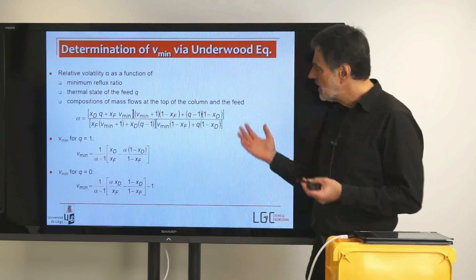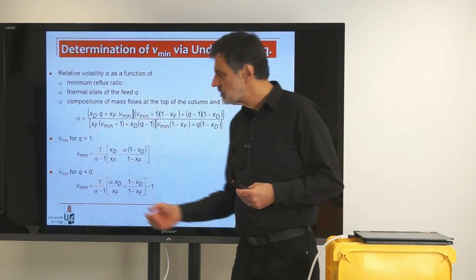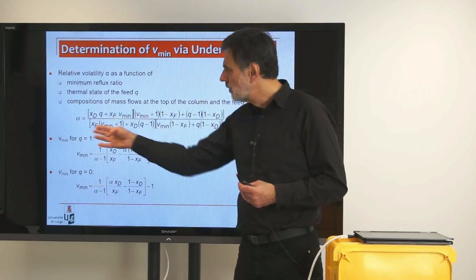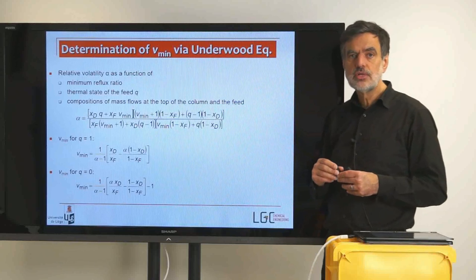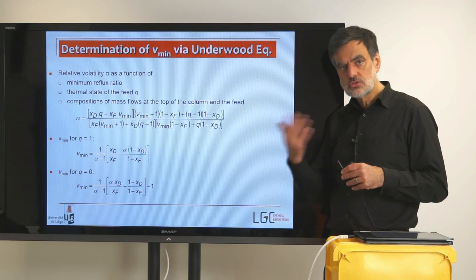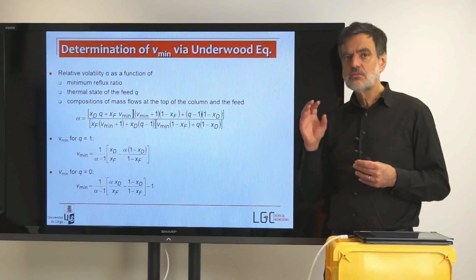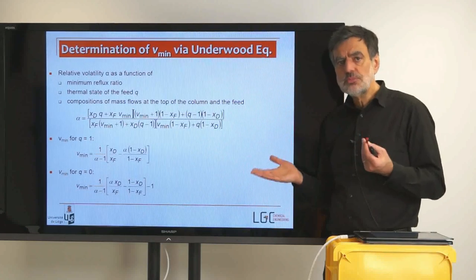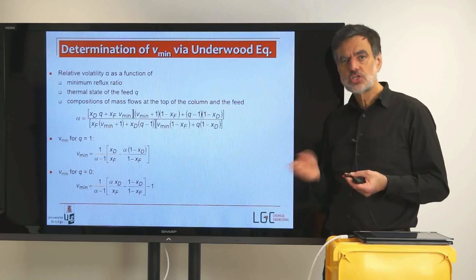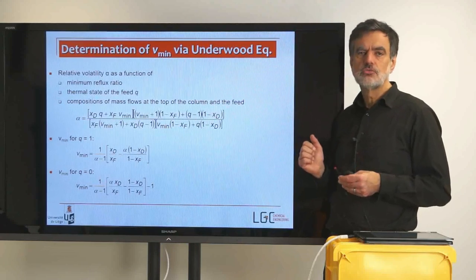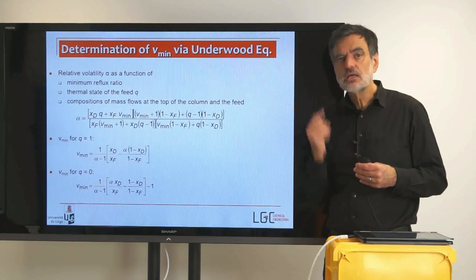So from the definition of your separation task, knowing the relative volatility of the system, the feed conditions, and xb and xd, you are able to determine nmin (minimum number of theoretical stages via Fenske) and vmin (minimum reflux ratio via Underwood). These are really limiting cases. You remember the diagram with n on the vertical axis and reflux ratio on the horizontal axis with a more or less hyperbolic curve between them. The question is where exactly that curve is located, and there Gilliland comes into play.